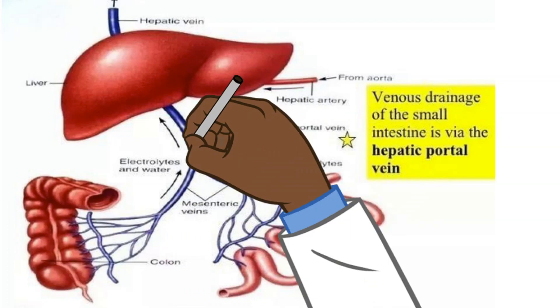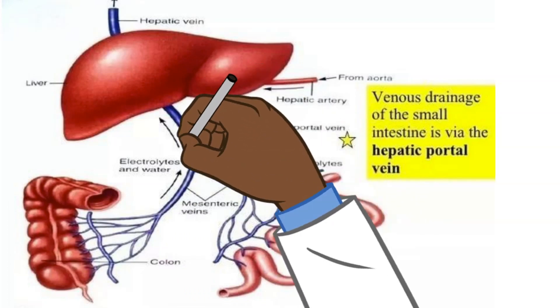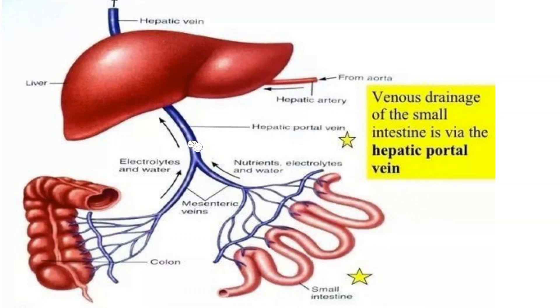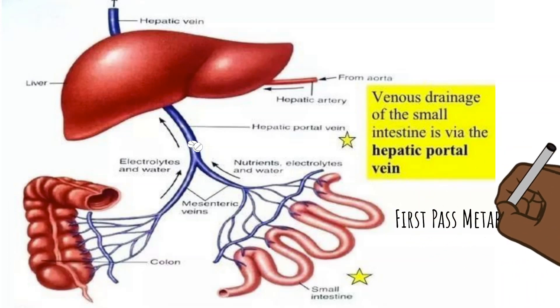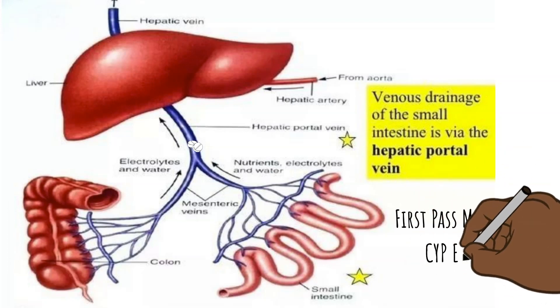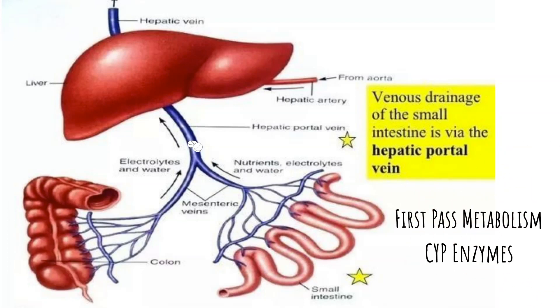So now you have the medication in the hepatic portal vein, and it's making its way to the liver. Once you get to the liver, you want to take into consideration the first pass metabolism and also the CYP enzymes.